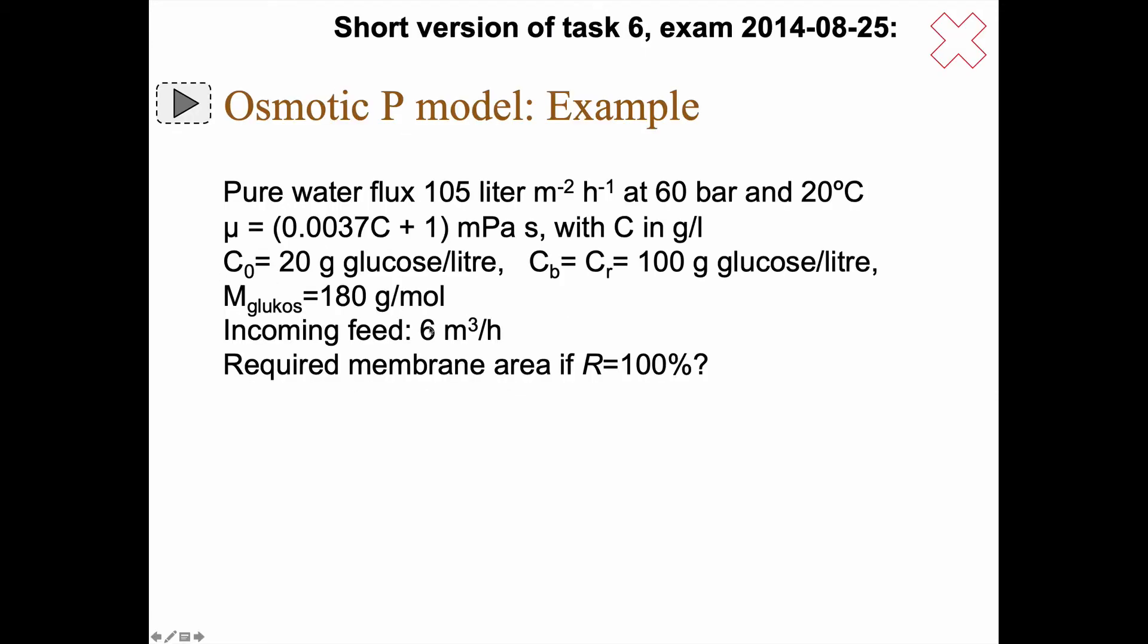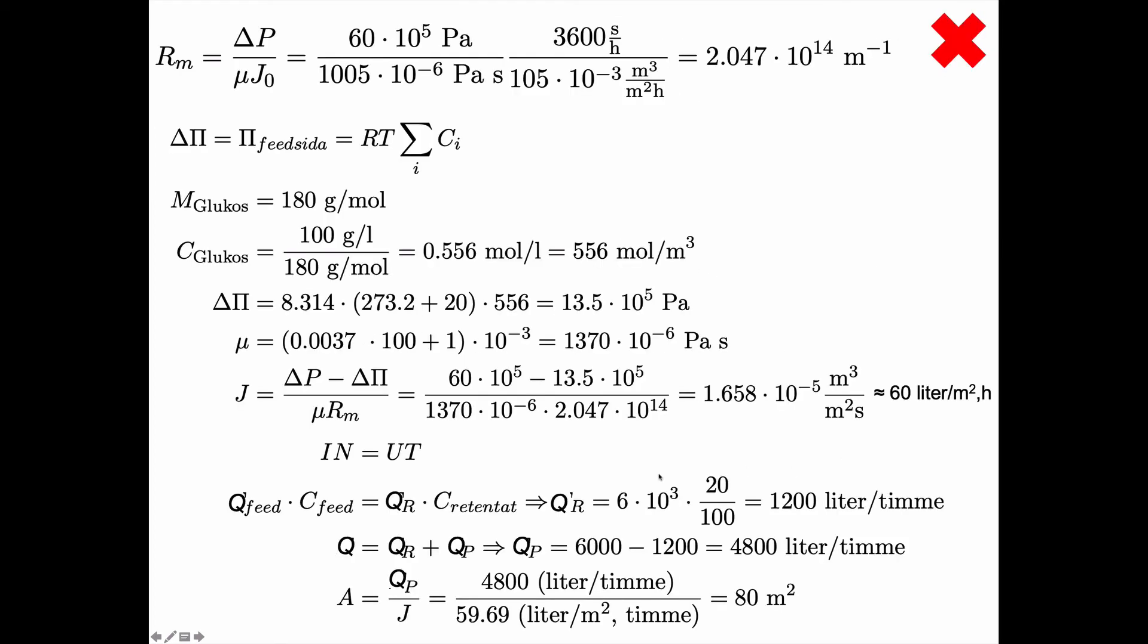Well we had 6 cubic meters per hour or 6000 liters per hour and I also had the concentration 20 in the feed and 100 in the retentate. So going back we see that you then take the 6000 times 20 divided by 100 and you get 1200 liters per hour.